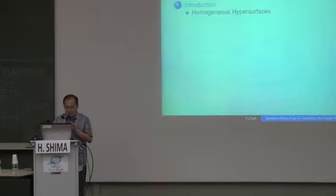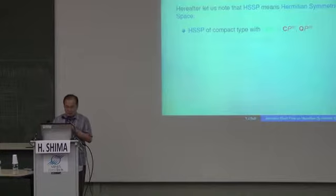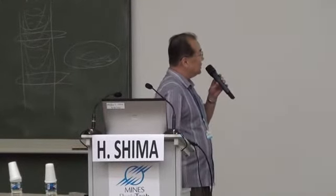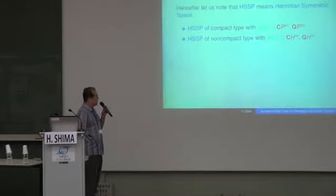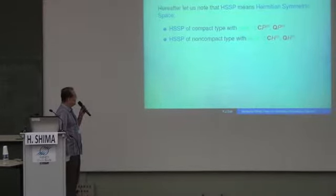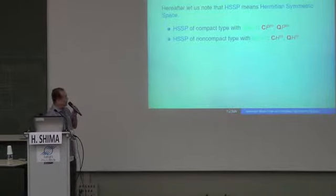In the first part, I want to discuss this particular point of Hermitian symmetric space. This kind of Hermitian symmetric space is well-known, and I have written it with HSSPDO — Hermitian symmetric space. With rank 1, I want to mention complex projective space and quaternionic projective space. And in the non-compact case with rank 1 in Hermitian symmetric space, we have complex hyperbolic space and quaternionic hyperbolic space.